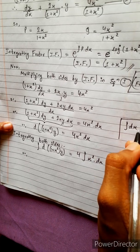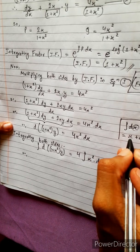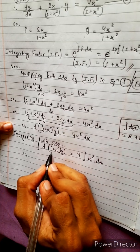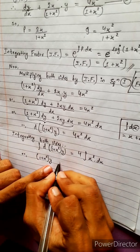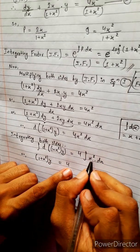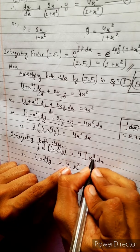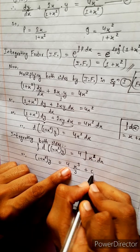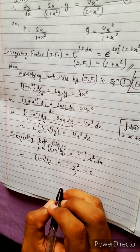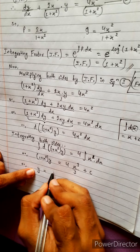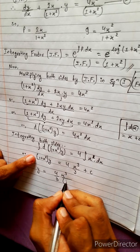Integrating, x plus c on the right side. Integrating 4x squared gives 4x cubed divided by 3. Therefore, 1 plus x squared into y equals 4x cubed divided by 3 plus c. So y equals 4x cubed divided by (3 times (1 plus x squared)) plus a constant.